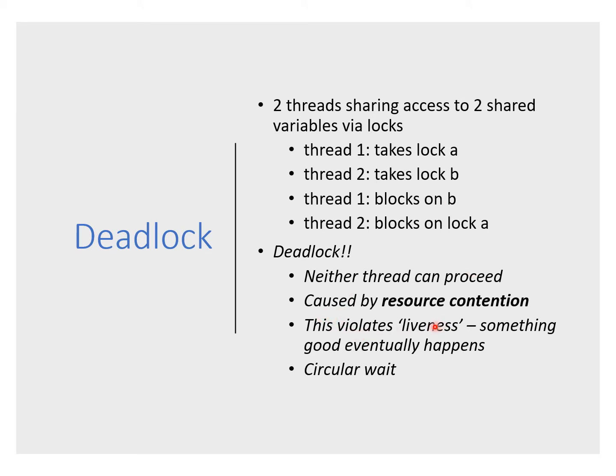Deadlock violates what's known as the liveness property of a system. Liveness is a good property because it means eventually something good is going to happen — we're going to make progress. When a system is deadlocked, it's not live. In the dining philosophers problem and many common resource contention problems, the cause is what's known as a circular wait: all philosophers have picked up resources but depend on a neighbor putting a resource down, which they can't do.